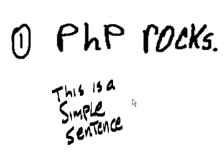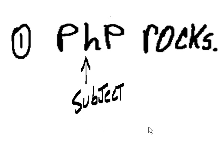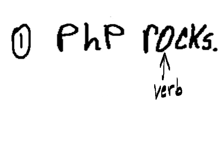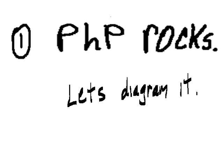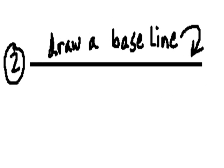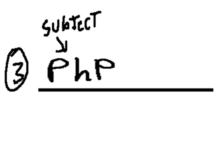PHP rocks — this is a simple sentence. PHP is the subject; by the way, PHP is a programming language. Rocks is the verb. To diagram it, first I draw a baseline, then I write PHP.